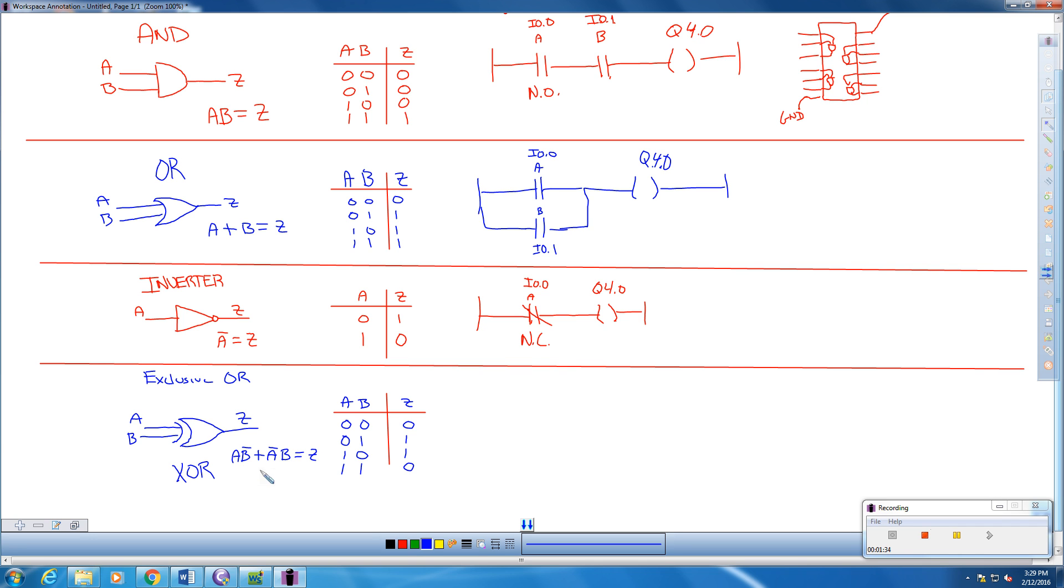Another way we can actually write this is A exclusively OR'd, which is just our plus sign with a circle around it, with B. A is exclusively OR'd with B.